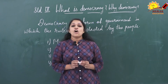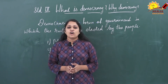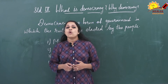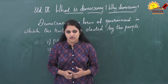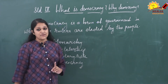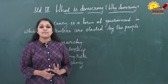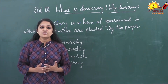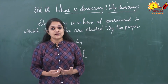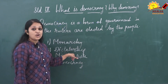Dictatorship is a form of government where a person or a political party has the power to do whatever they want. Here in dictatorship, one person or one political party has powers and they can do whatever they like. You can take the example of Hitler.